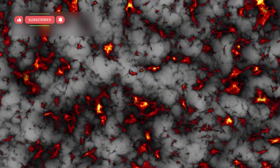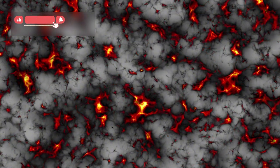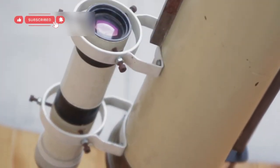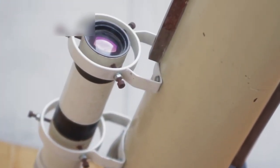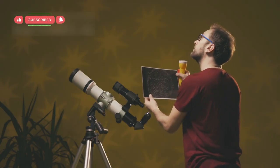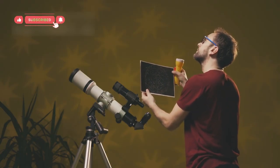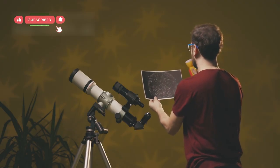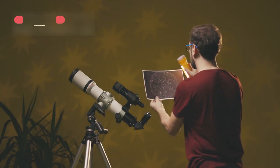As Webb continues its mission, scientists expect many more surprises. Some believe the telescope may soon detect the very first generation of stars, known as Population III stars, which have never been directly observed.